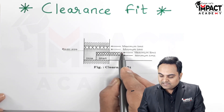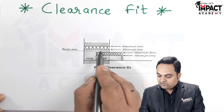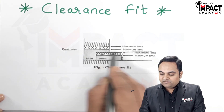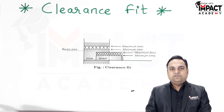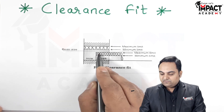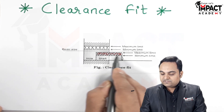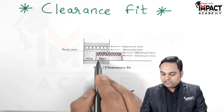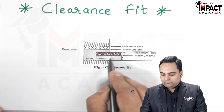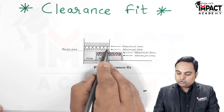We also have the basic size, shown by the dotted line, which represents the correct or standard value. Apart from that, we give some allowance — the shading shown here indicates that the dimension can vary from the minimum limit up to the maximum limit, meaning we can have different diameters of the shaft.